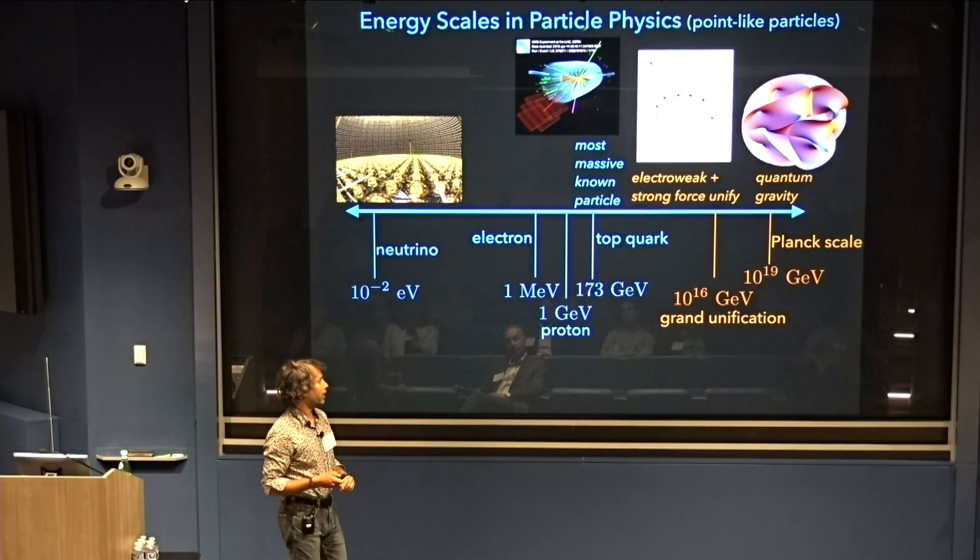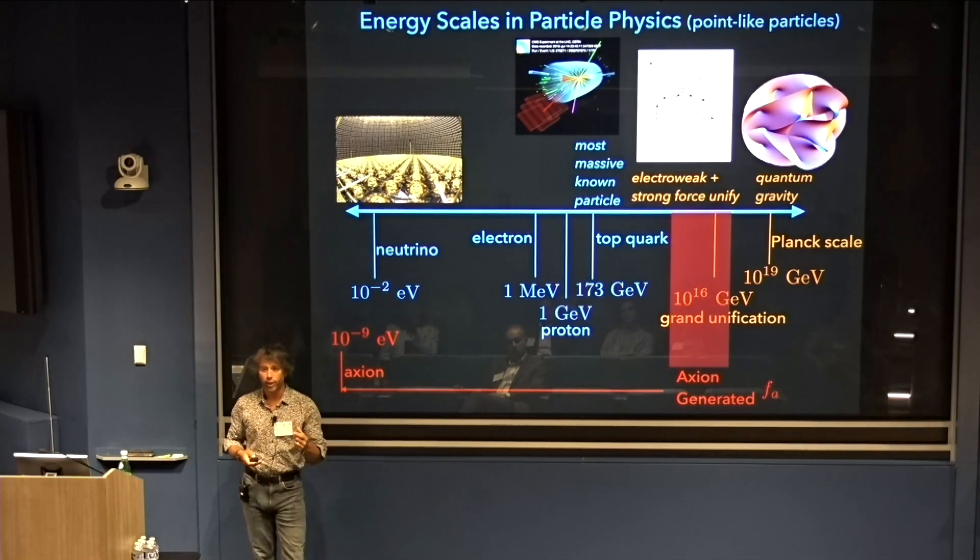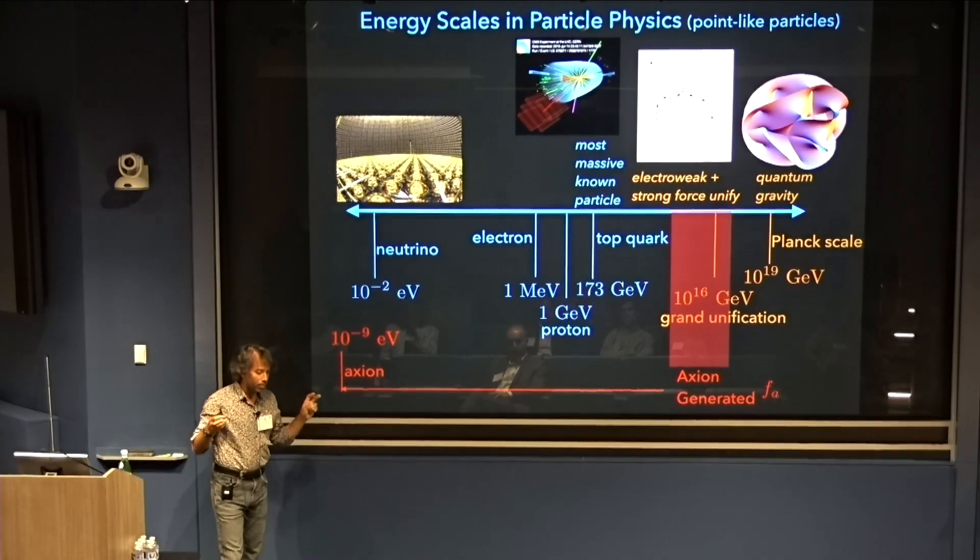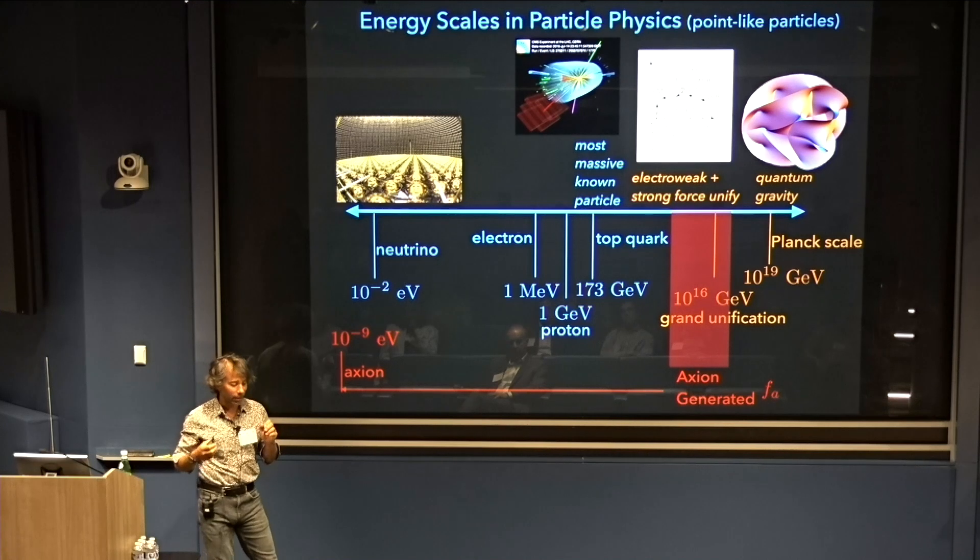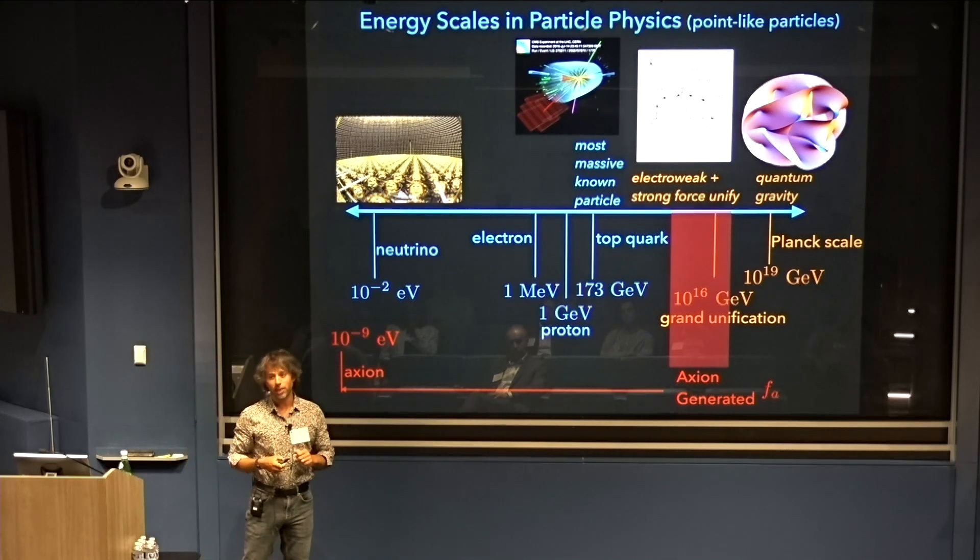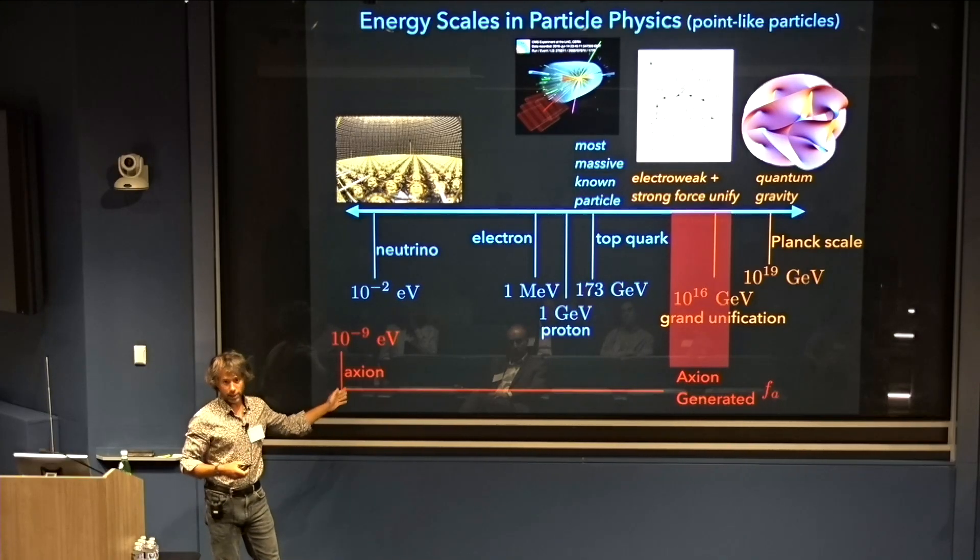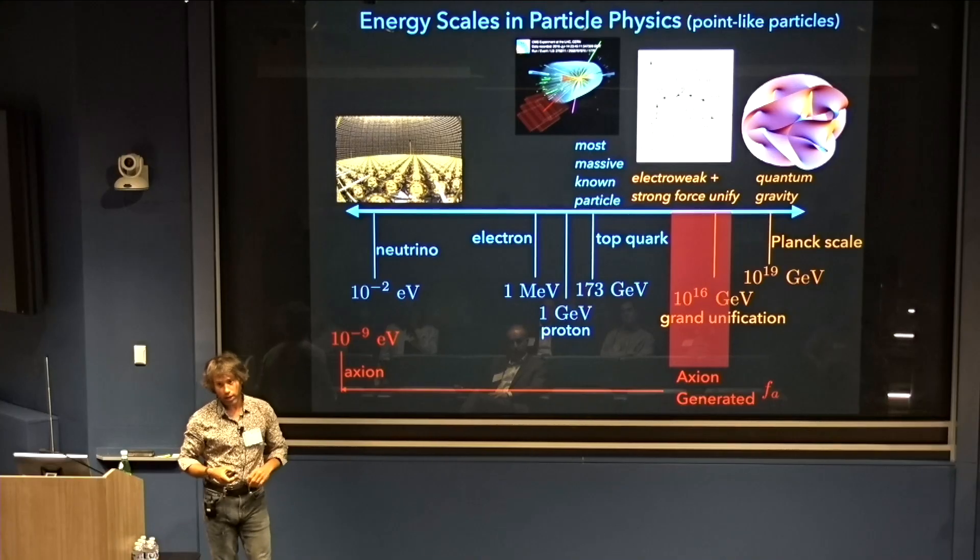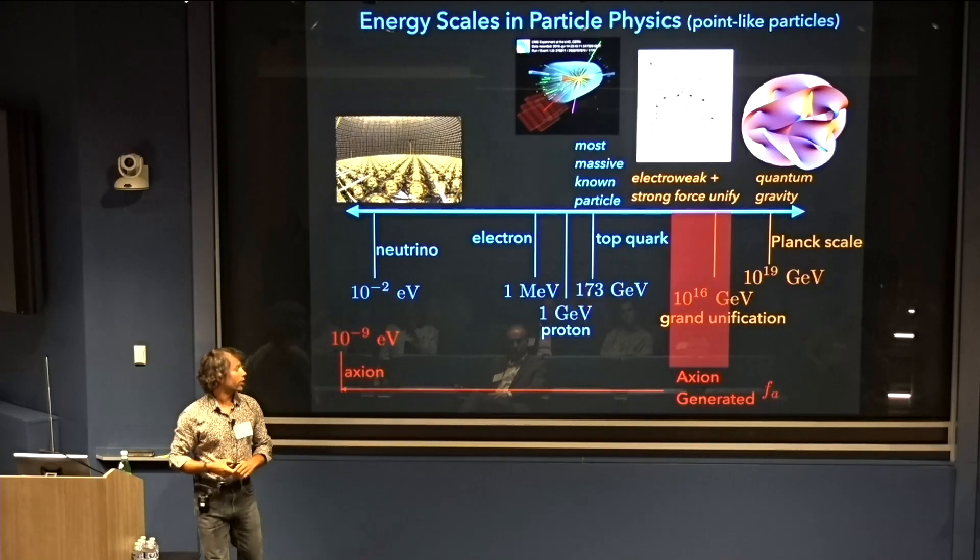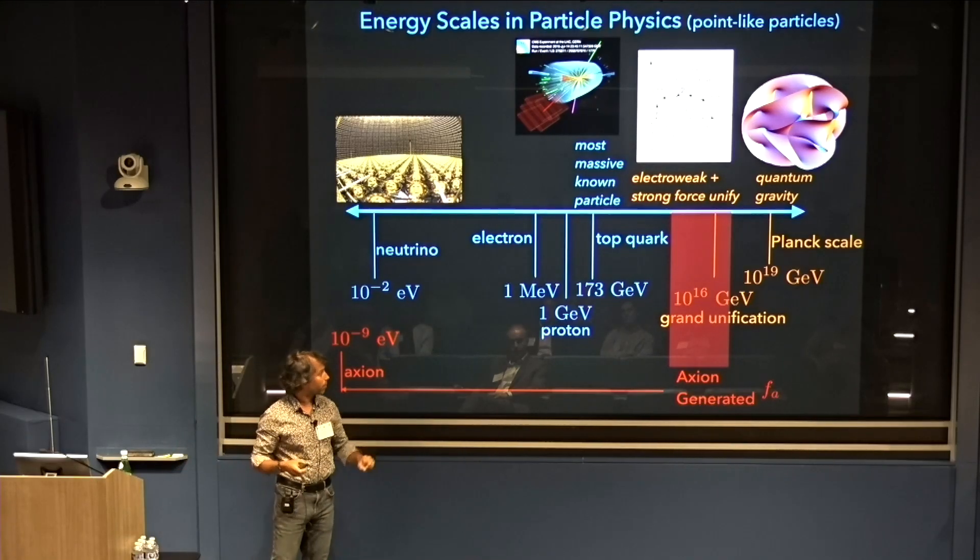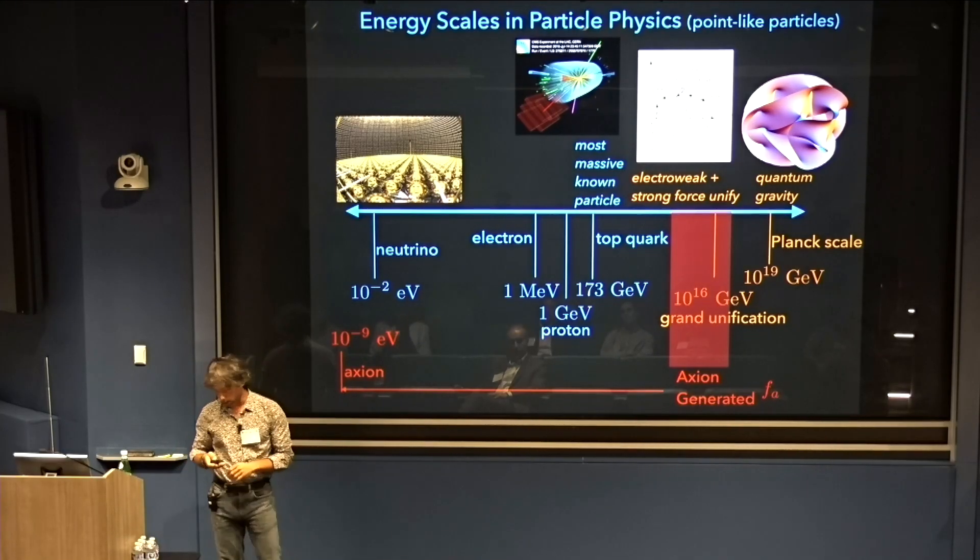So axions, if they exist, would be associated with physics generated at an extremely high scale, for example, the scale of grand unification. That is, axions would be born at this energy scale. I'll give you an example of what I mean by an axion being born at a certain energy scale. But due to symmetries, axions are ultralight. If they exist, they would be the least massive particle in nature. Due to symmetries, in fact, the higher the scale at which the axion is born, the lower the mass of this axion.